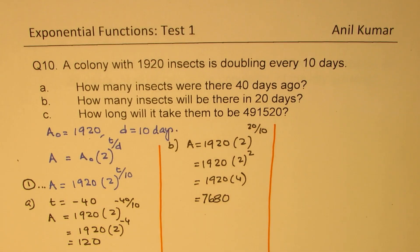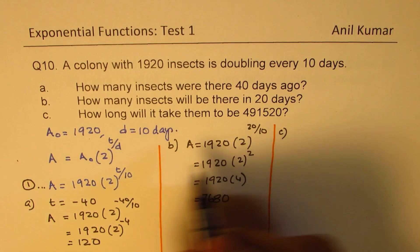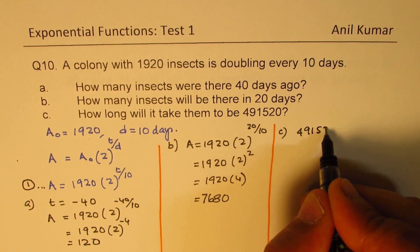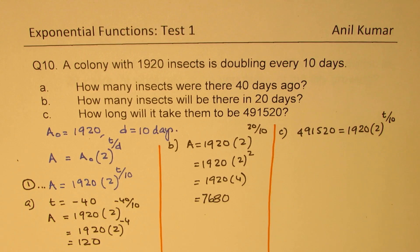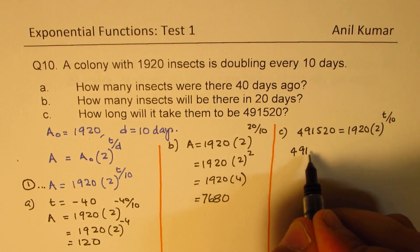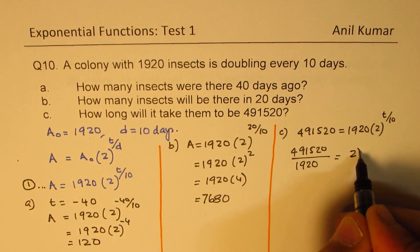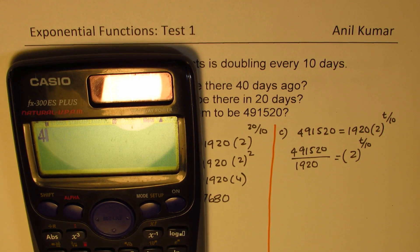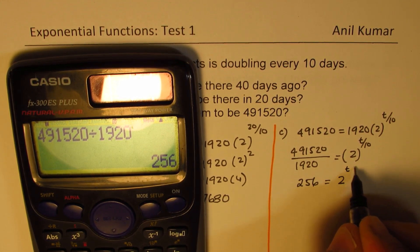Now let's look into part C: how long will it take to reach 491,520? That is the final value; we need to find time. So we set 491,520 equals 1920 times 2 to the power of T over 10. Dividing both sides by 1920, we get 2 to the power of T over 10 equals 256.